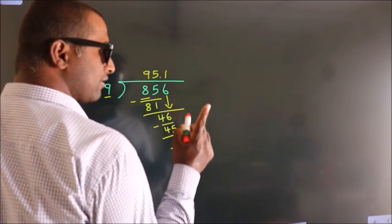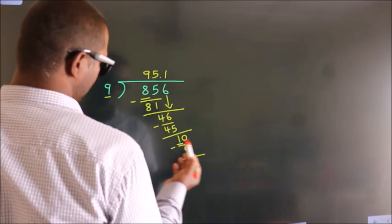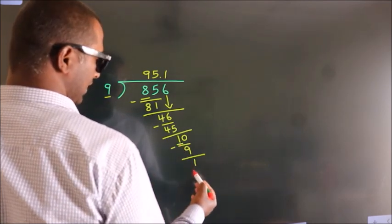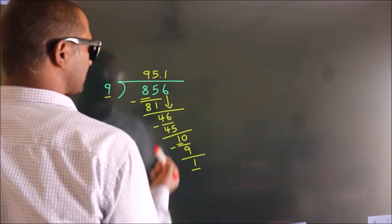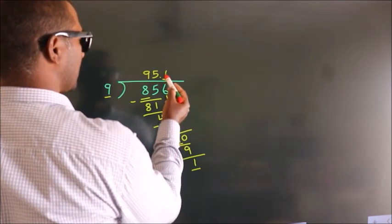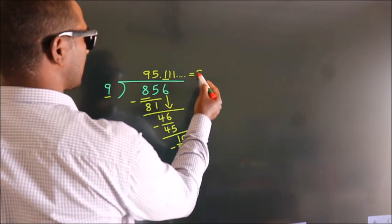Now you observe. We had 1 here and we got 1 again. That means this number keeps on repeating. So this is our quotient.